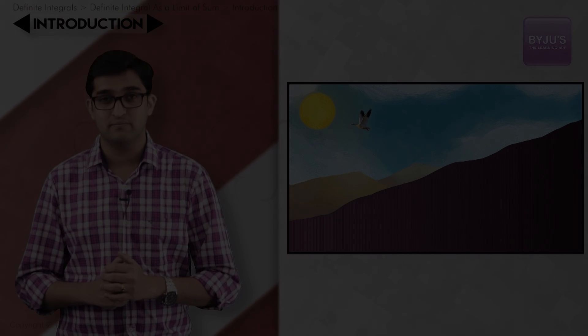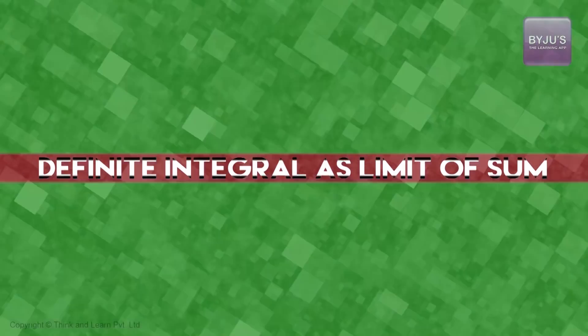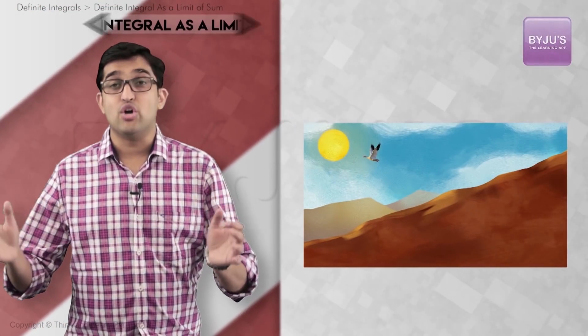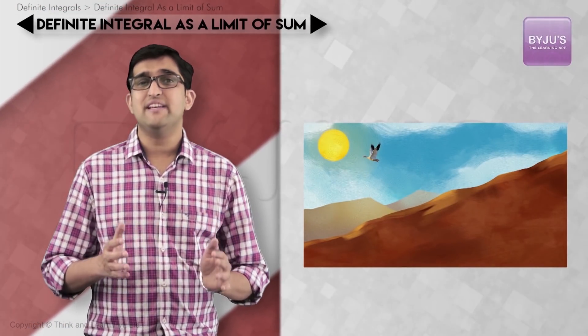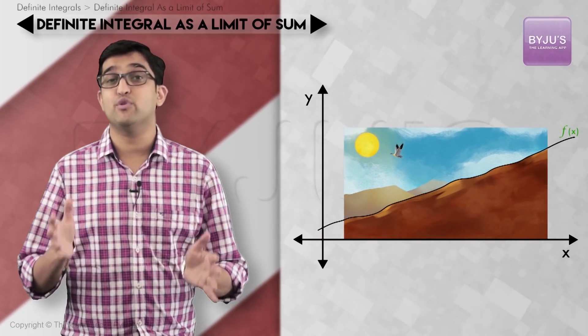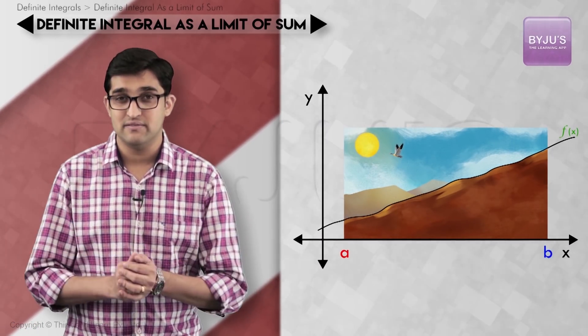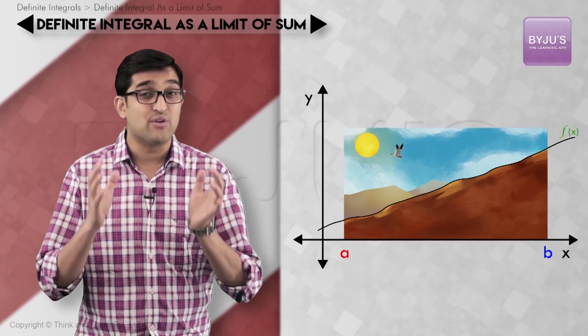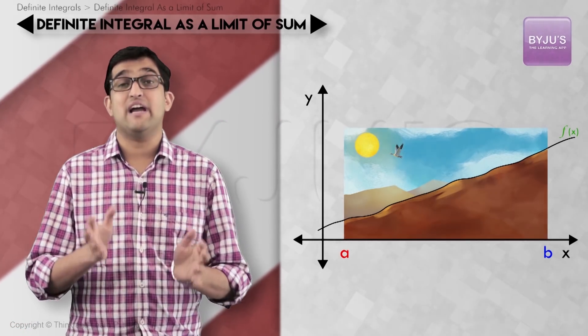Consider the sketch on the wall. For our convenience, we'll make it identical to the function f(x) between the input values a and b. Now let's construct our rectangles to calculate the area.